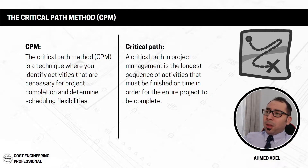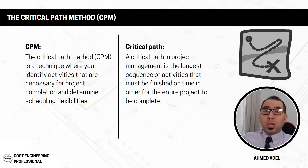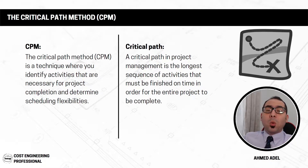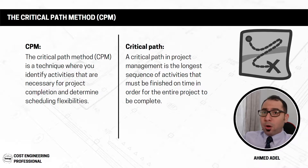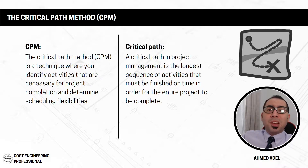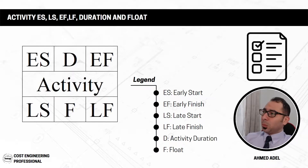The critical path in a project is the longest sequence of activities that must be finished on time in order for the entire project to be completed on time. It's a sequence where if any activity is delayed by one day, the project completion is delayed by one day as well. These are the critical activities — they cannot be delayed by even one second without delaying the project.